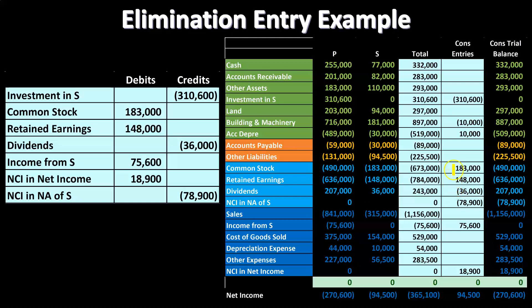You might think it's strange that we're removing the full equity section of S, since we should only remove the proportion of S controlled by P. For example, if P owns 90% of S, wouldn't we just remove S's portion? But the standard says no — we consolidate the entire thing. So we remove the entire equity section and then show in one line item the non-controlling interest representing the minority interest.